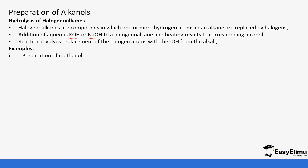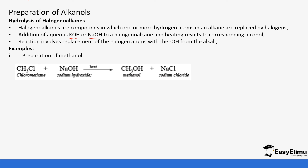For example, in the preparation of methanol we use chloromethane — a methane with a chlorine substituent. If you react this with sodium hydroxide, there is an interchange of the anions: the chloride ion and the OH ion. So we form methanol and sodium chloride.